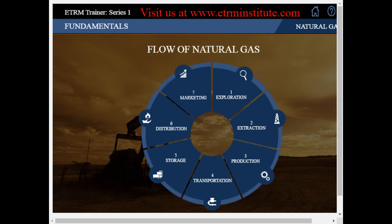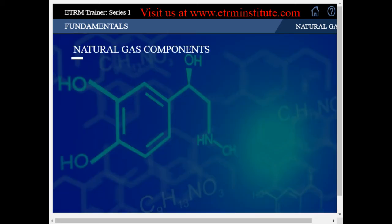We will cover each of the stages in the flow of natural gas in depth. The components of natural gas can be classified into two groups: those that are valuable, also called value adds, and those that are harmful and need to be removed. These are referred to as impurities.